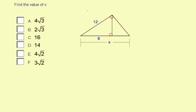Find the value of x. We have three similar right triangles: the smallest right triangle, the medium-sized right triangle, and the large right triangle.